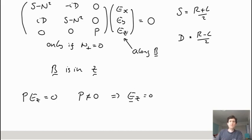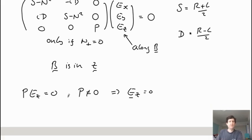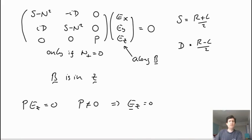So for these right-hand whistler waves, there's no electric fields along the field. Then we can write down what the E_x and E_y components are, and you can see they're going to be very, very similar. They both have this factor of S minus N squared, and they both have these factors of iD with just a minus sign on the y component. So we can take either of these two rows and end up with the same answer. So let's just take this first one. So we have S minus N squared times E_x minus iD times E_y is equal to zero.